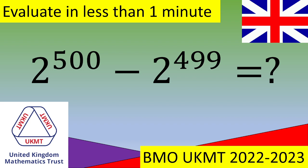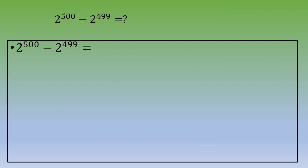In this quantity you've got two numbers with a common base, which is 2, and the powers are different — on one side 500, on the other side 499. The idea is to rewrite 2^500 as 2^(499+1), so this becomes 2^(499+1) minus 2^499.